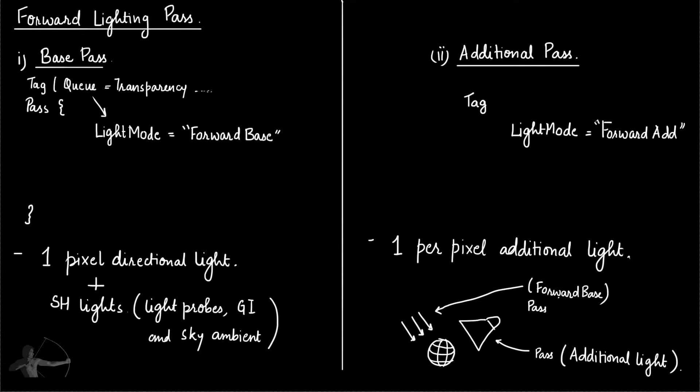Base pass is the base of the forward lighting. If we are performing forward lighting, you will have to have a base pass which will render one per pixel directional light and all other spherical harmonics lights such as the light probe that you have in the scene or the global illumination or the sky ambient. And the additional pass is for any additional light in the scene.